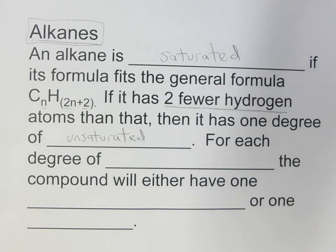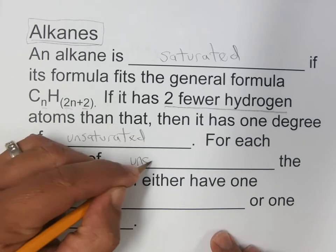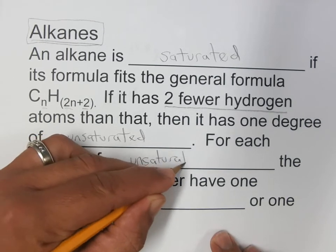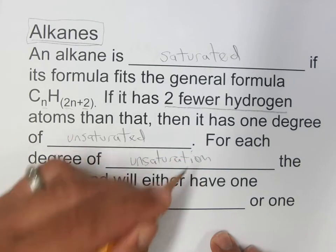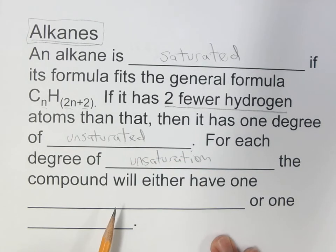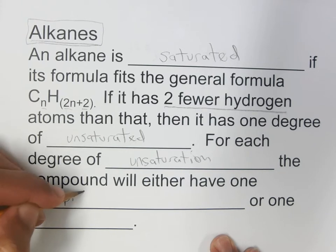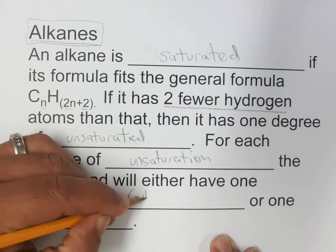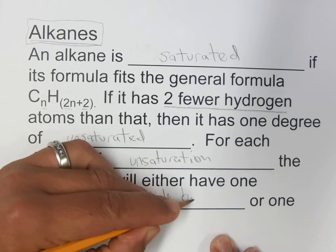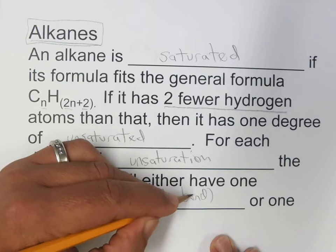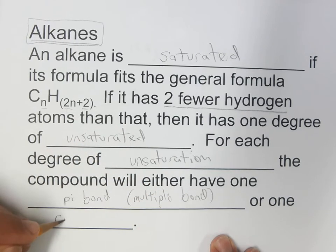If saturated means it has the maximum number of hydrogens, then unsaturated means it has fewer hydrogens. For each degree of unsaturation, the compound will either have one pi bond, a multiple bond, or one ring.